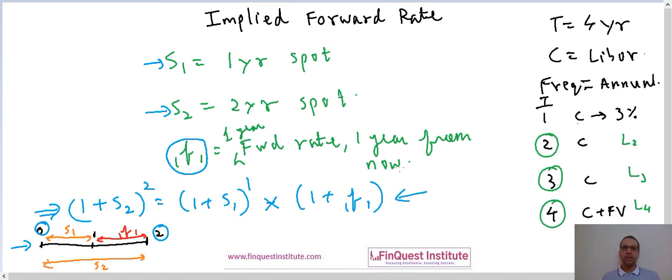Likewise, if we have access to spot rates for other tenors, we can calculate the respective forward rates for those tenors as well. Once we have the forward rates available, we can use that as coupons or floating leg coupons for pricing any floating rate products which are sitting on our books, be it a floating rate note, be it a swap, or be it any other interest rate product. This completes our short introduction on implied forward rates. Thank you.